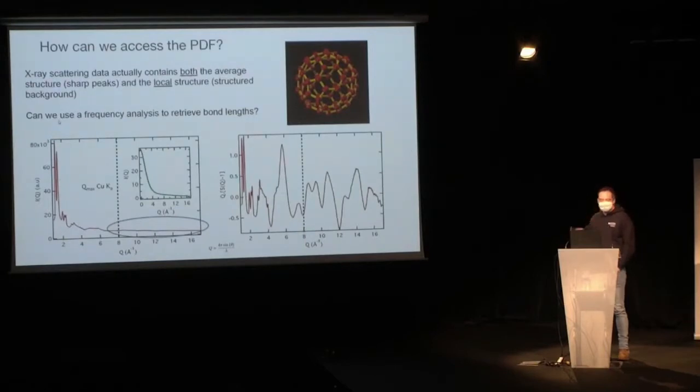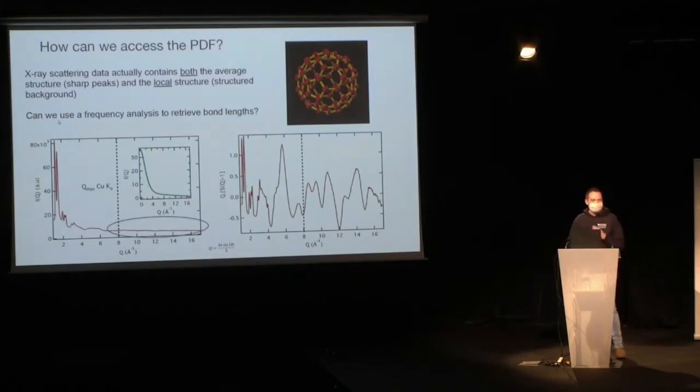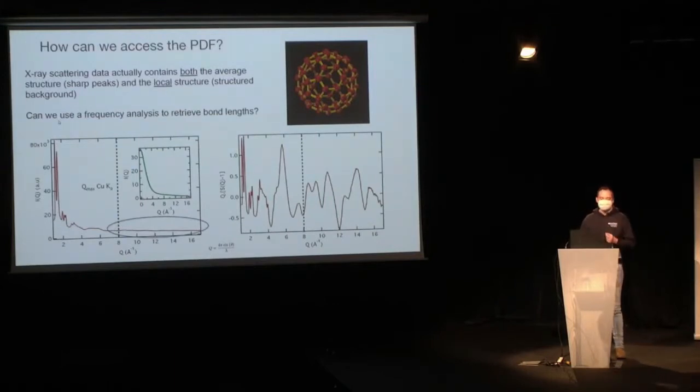So how can we access this? When we look at X-ray scattering of a material, it actually contains information on both the average structure and the local structure. It's just that normally we choose not to look at the local structure — we only analyze the sharp peaks.